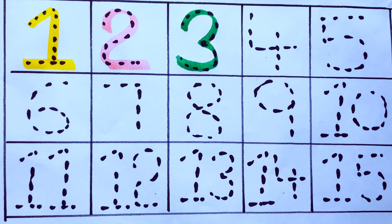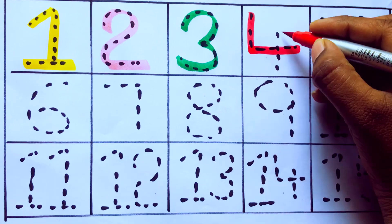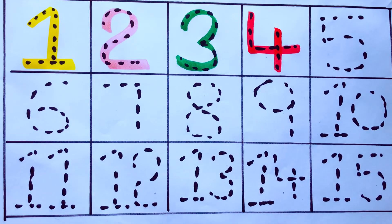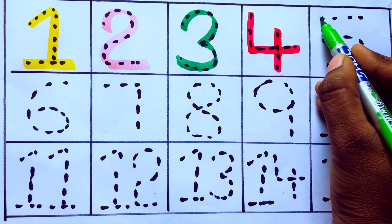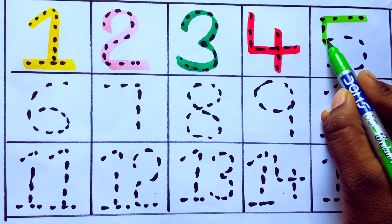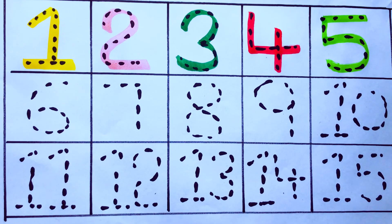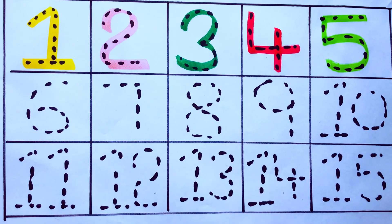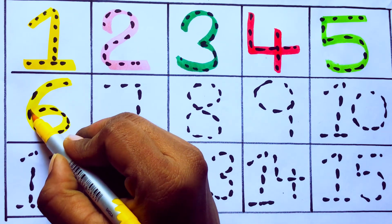Red color, four, four. Light green color, five, five. Yellow color, six, six.